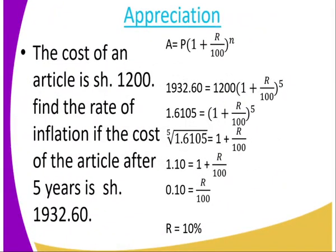Example 2: The cost of an article is 1,200. Find the rate of inflation if the cost of the article after 5 years is 1,932. In this case, we have the amount, the time, and the principal. What we lack is the rate. That is why in our formula after substituting, we don't have R — and that is what we are calculating.